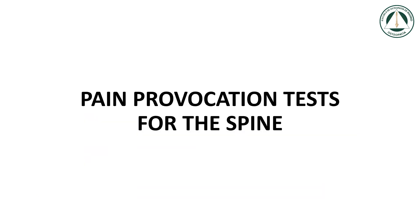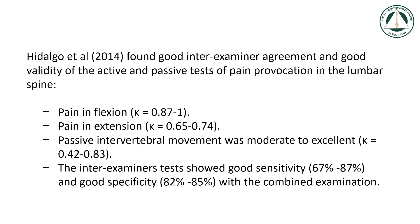Pain provocation tests for the spine: Hidalgo et al. 2014 found good inter-examiner agreement and good validity of the active and passive tests of pain provocation in the lumbar spine. Pain in flexion: kappa equals 0.87 to 1. Pain in extension: kappa equals 0.65 to 0.74. Passive intervertebral movement was moderate to excellent, kappa equals 0.42 to 0.83. The inter-examiner test showed good sensitivity (0.67 to 0.87) and good specificity (0.82 to 0.85) with a combined examination.